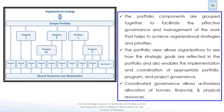The portfolio components are grouped together to facilitate effective governance and management of the work, helping to achieve organizational strategies and priorities keeping in view the vision of the organization. The portfolio view allows organizations to see how strategic goals are reflected in the portfolio and enables coordination of appropriate portfolio, program, and project governance. Coordinated governance allows authorized allocation of human, financial, and physical resources — eliminating conflicts over funds and resources.